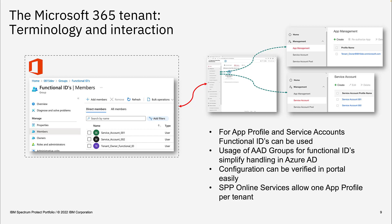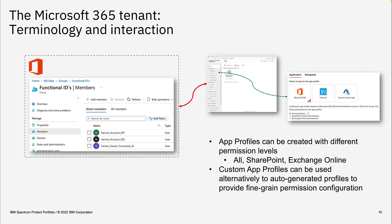When generating an app profile, the Spectrum Protect Plus Online Services need access rights granted to the customer's Microsoft 365 tenant. The customer has two options: on the one hand, they can accept what SPP Online Services has implemented — an automated user access right management. They can choose between three options.